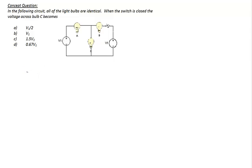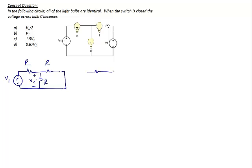I'm going to draw this circuit twice, using R to represent the light bulbs. On the left circuit, the left voltage source will be on and the right voltage source will be off. I will call the voltage across the middle resistor, which is bulb C, V C prime. Then I'll draw the circuit again; this time the left voltage source will be off and the right voltage source will be on, with identical bulbs R, R, and R, and I'll label the voltage across the middle one V C double prime.